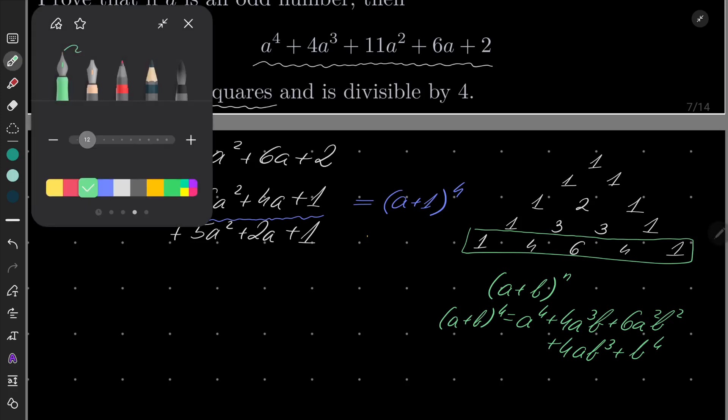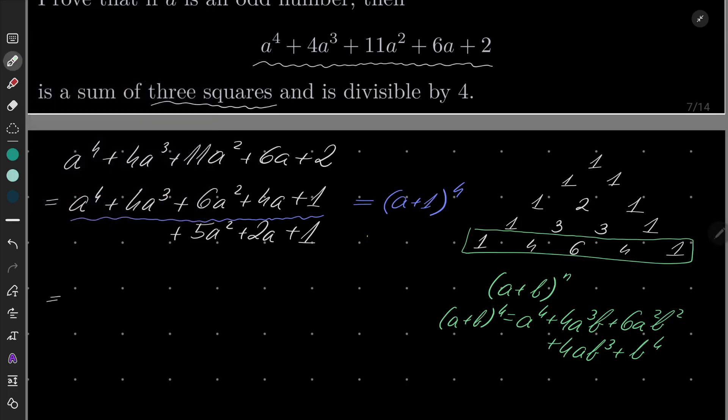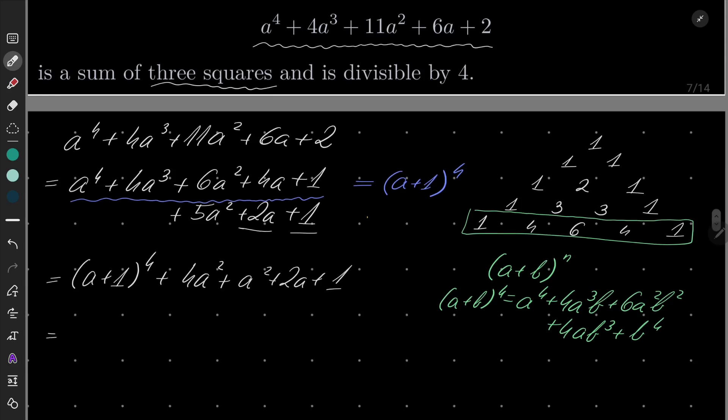Okay, so now we know something. We have now produced one square or fourth power, but fourth power is a square of a square. So, now we have (a+1)^4. What to do with this part? Well, if you look closely, 2a plus 1 is very telling. Namely, we will split 5a^2 into 4a^2 + a^2 + 2a + 1. So, what happens now?